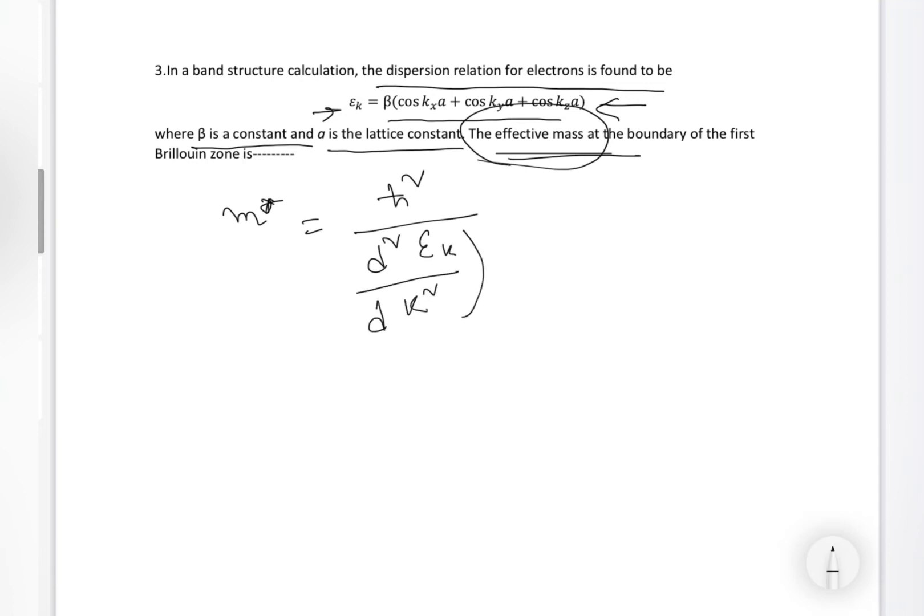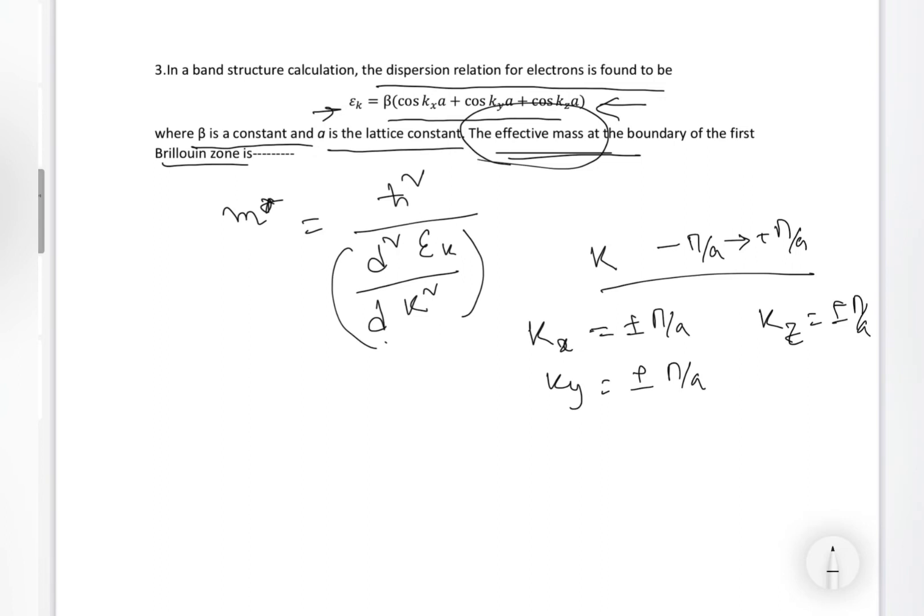For effective mass, what is effective mass of electron is m* = h-bar² / (d²E/dk²), right? They are asking in the first Brillouin zone. First Brillouin zone for that, we know, the k should be -π/a to +π/a. That is the first Brillouin zone. Here it is in three-dimensional system. We can write k_x = ±π/a, k_y = ±π/a, and similarly k_z = ±π/a.